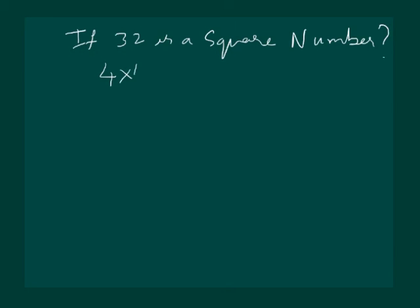Let us try to find out if 32 is a square number. We know that 4 times 4 is 16. Then we have 5 into 5, 25. And 6 into 6 is 36.